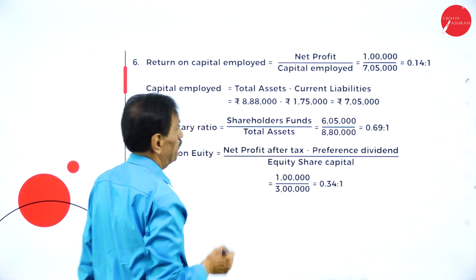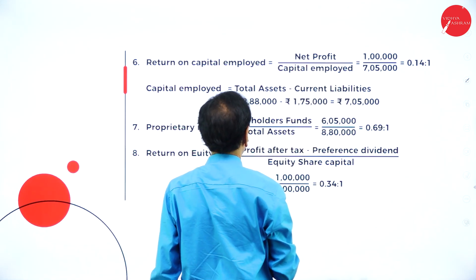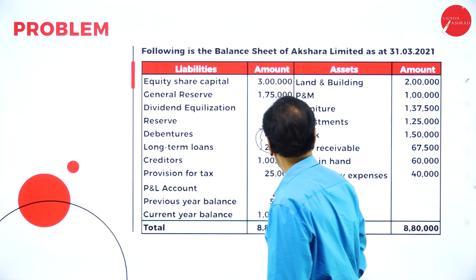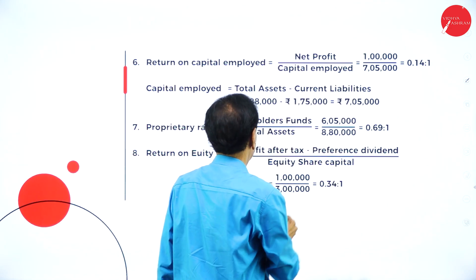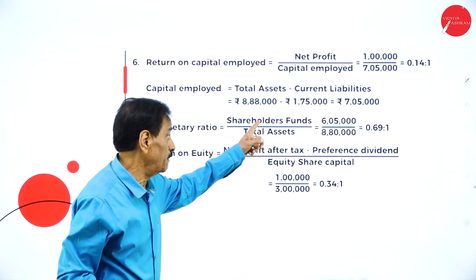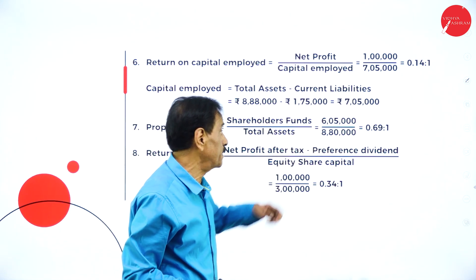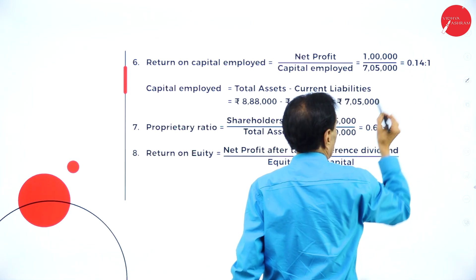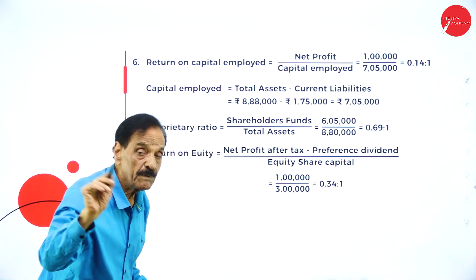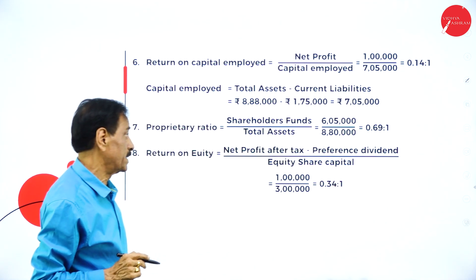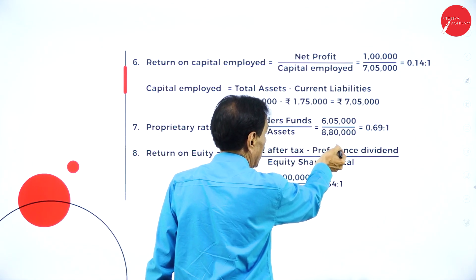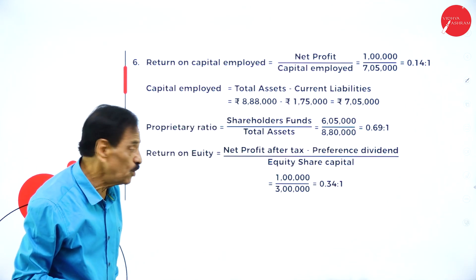Return on capital employed: net profit divided by capital employed. Net profit for the current year is 1,00,000; capital employed is 7,05,000. Capital employed equals total asset minus current liability: 8,80,000 minus 1,75,000 = 7,05,000. Result: 0.14 is to 1. Proprietary ratio: shareholders fund divided by total asset = 6,05,000 divided by 8,80,000 = 0.69 is to 1.